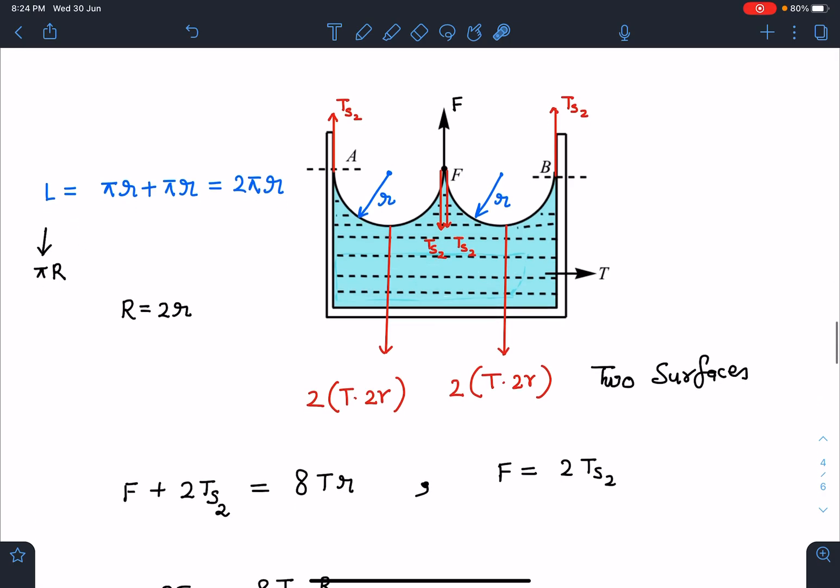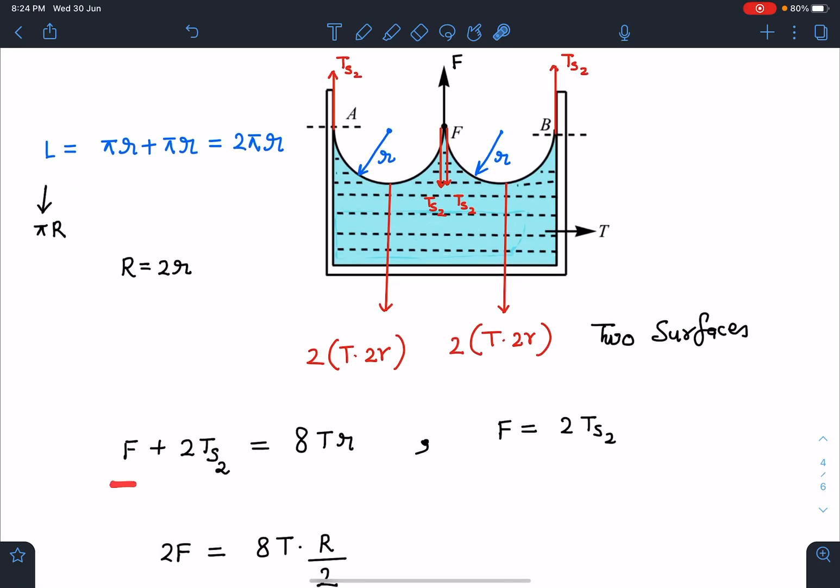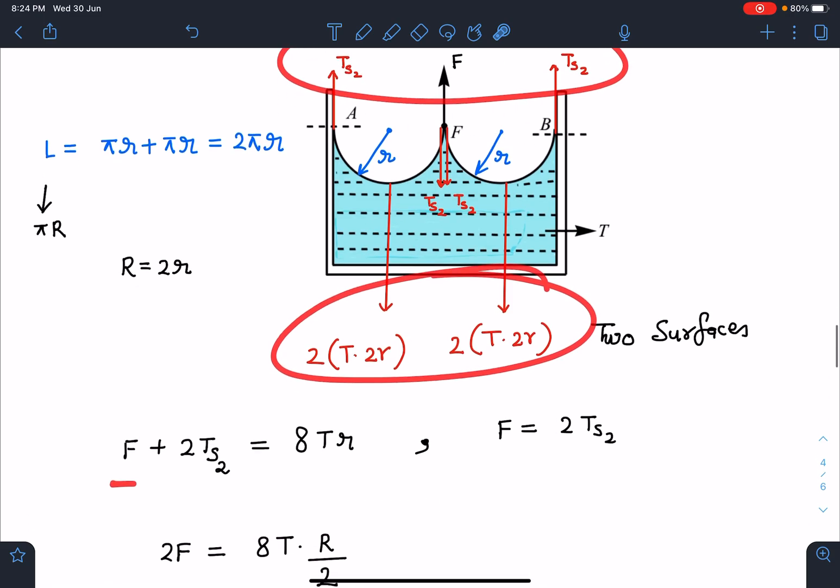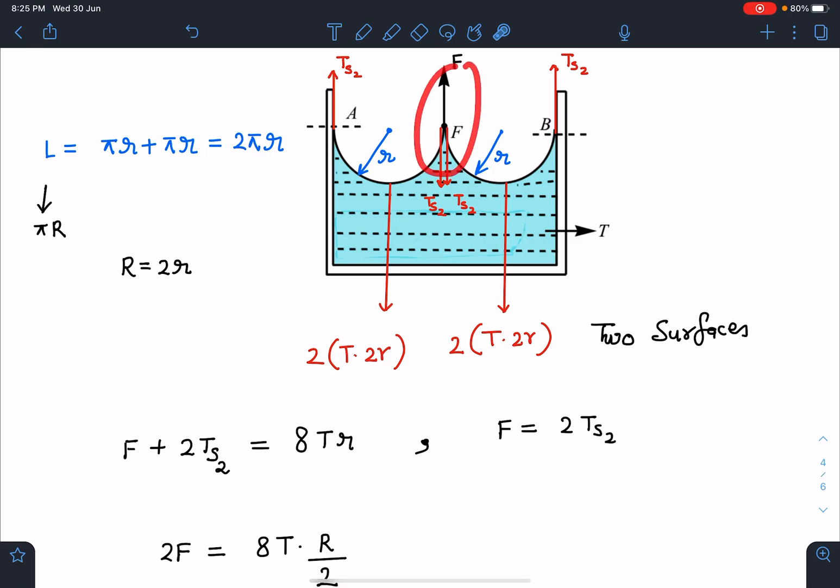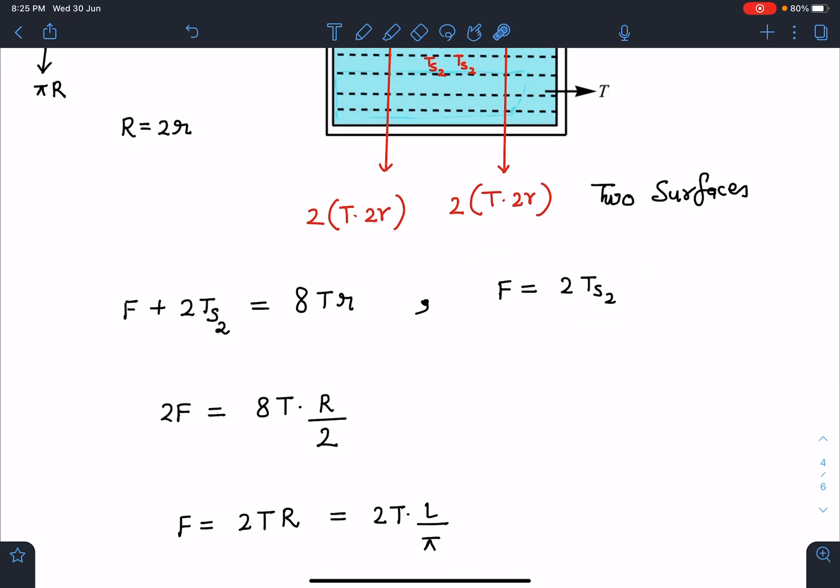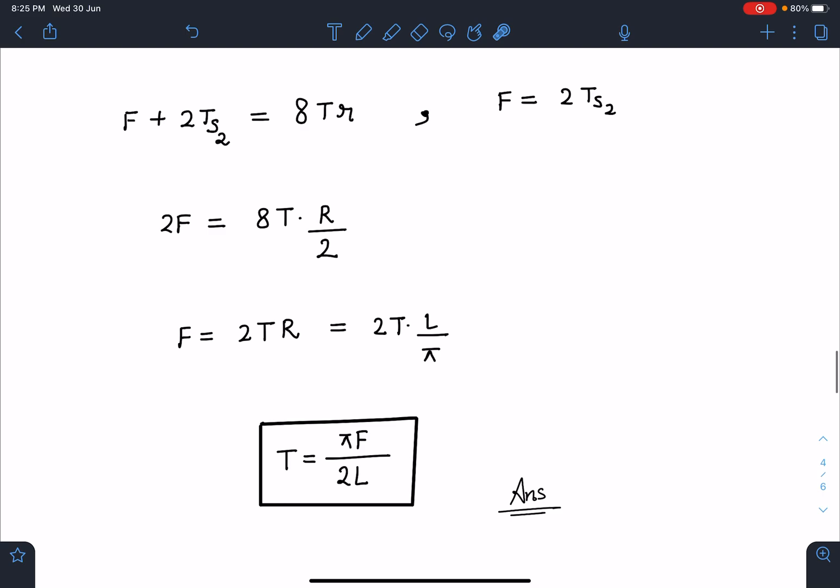So from here you can see the force F I am just balancing the forces net force upward is equal to force due to surface tension which is F plus 2TS2 is equal to 8TR and here we have another relation F is equal to 2TS2. Now after using this I can get in terms of capital R this I can write 2F and that will become 8T into capital R by 2. So F is coming as T into 2R and where R is L by pi. So if I substitute this value I am getting surface tension value as pi F by 2L and this is the answer for first part.